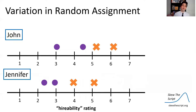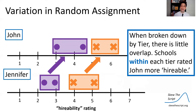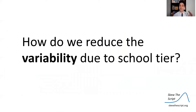However, what if we categorize these ratings by the tier of the university they're coming from? If we look at the tier one and tier two ratings and compare within those groups, we see that when broken down by tier, there is little to no overlap. Schools within each tier all rated John more hireable. Putting all the tiers together in a broad comparison created more variability, and when we control for variability by tier, we see those differences come into more stark terms. So how do we reduce variability due to school tier in the design of our study?